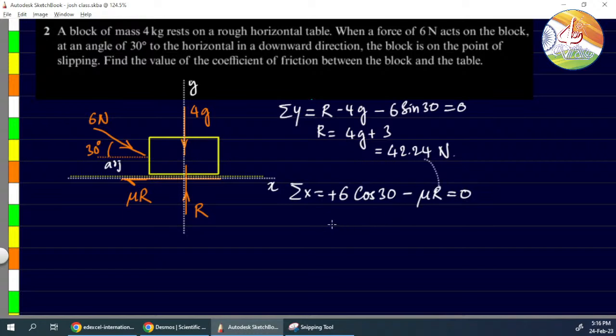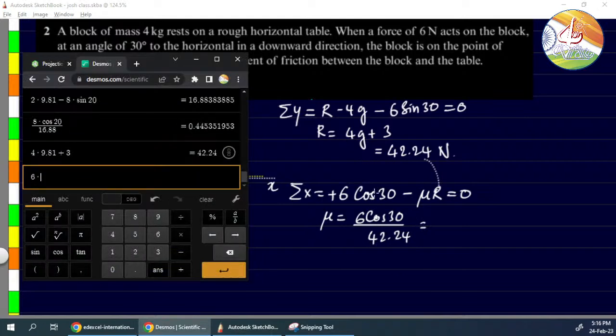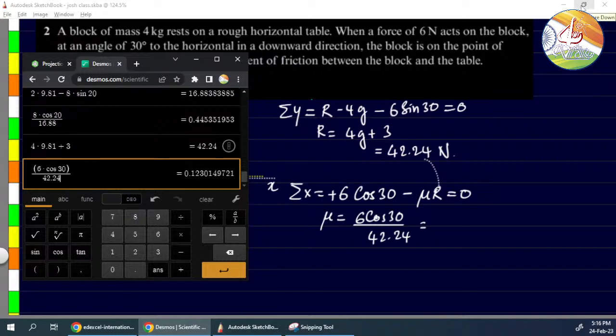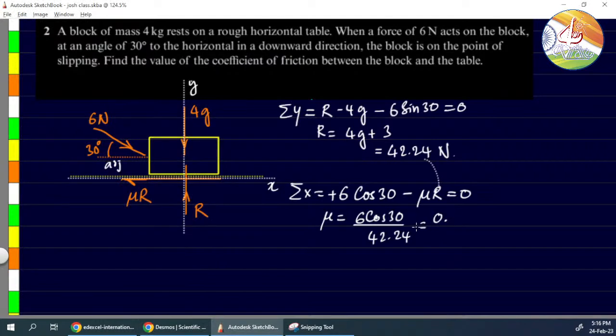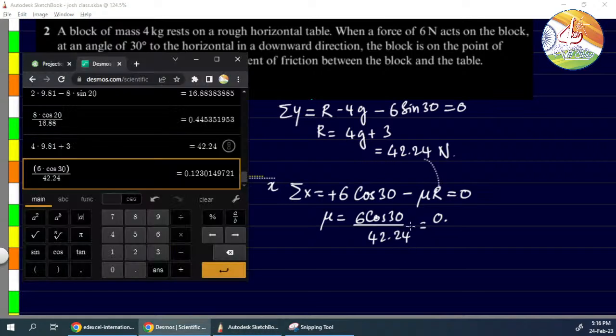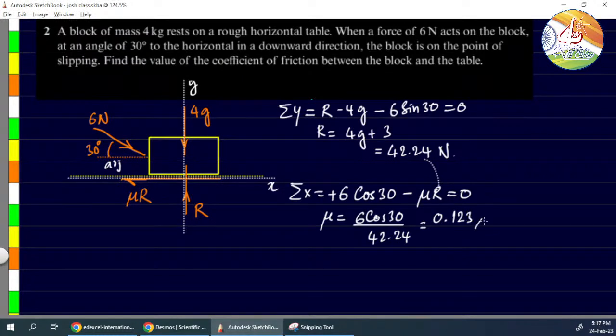We know R value, so substitute. We get μ as 6 cos 30 divided by R. 0.123.